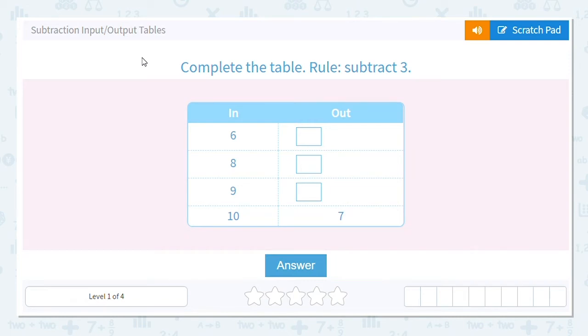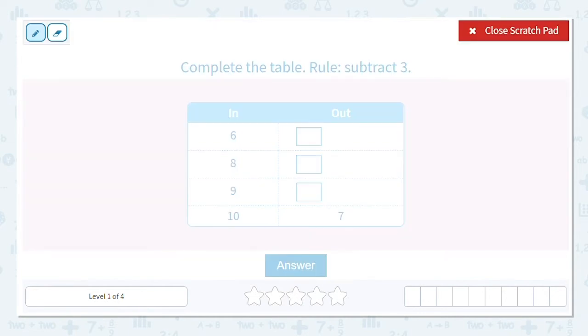All right, let's practice subtraction input and output tables. Okay, so we have a table here, and our rule is to subtract 3.